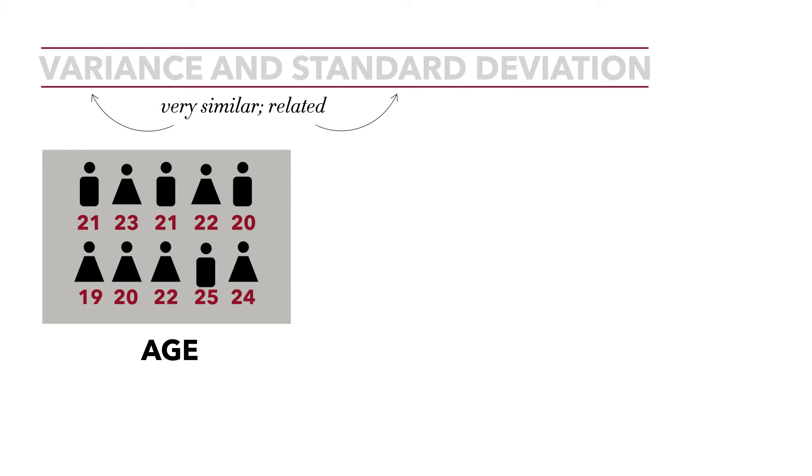So here we have our data, and we're going to calculate variance with this formula. Variance equals each value of x minus the mean of x squared, all of those differences summed, and then divided by n minus 1.